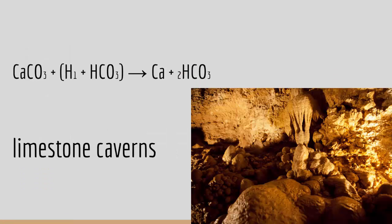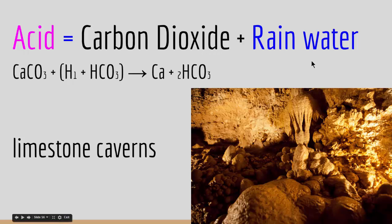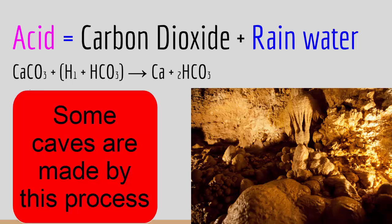A different way chemical weathering works is by acid. We know that we can make acid from carbon dioxide and rainwater. When we have CO2 and H2O, we can create acid. Acid is highly reactive with calcite or CaCO3. When acid interacts with a rock that contains calcite, it will chemically weather it away and the rock will decompose.